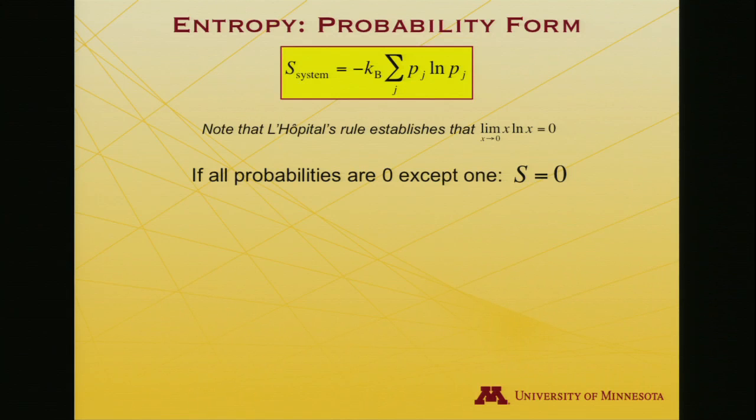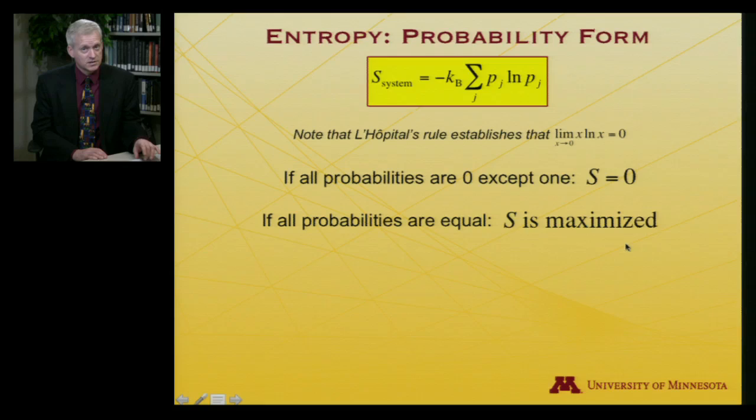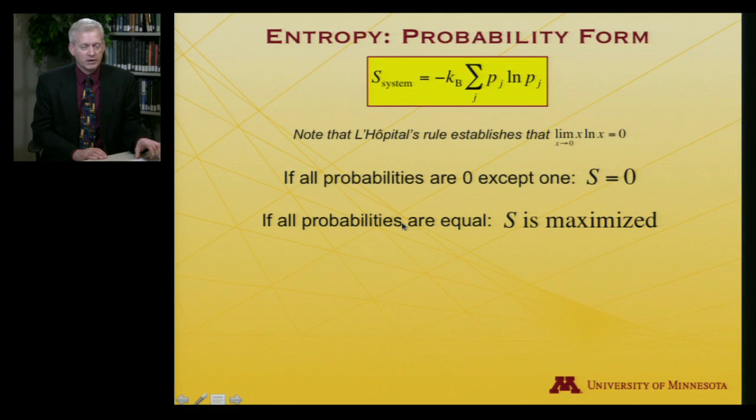In addition, you can show, and you would use calculus to show this, and a special little trick that only n minus one of the probabilities are independent. That last probability depends on all the others. But if you play around with that, you might be able to prove to yourself that the entropy is maximized when all the probabilities are equal for all possible states.